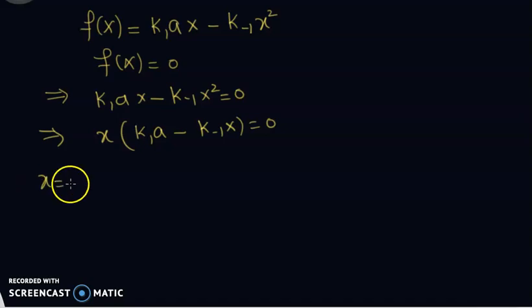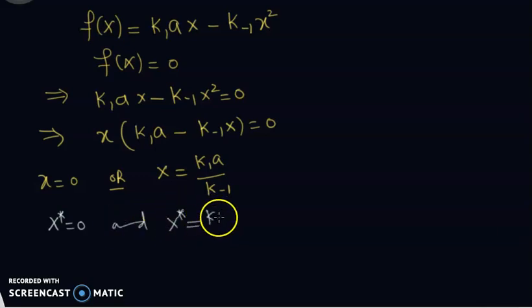Then either X is zero or X equals K₁A divided by K₋₁. So there are two fixed points: one is X* = 0 and the other is X* = K₁A/K₋₁.